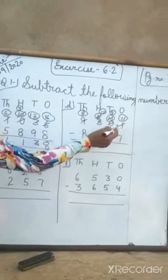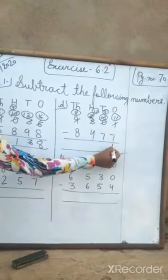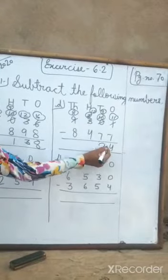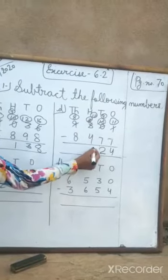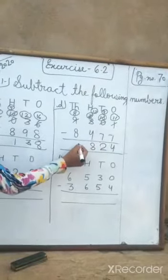Now, 11 minus 7 is 4. 9 minus 7 is 2. 12 minus 4 is 8. And 8 minus 8 is 0. The answer is 824.